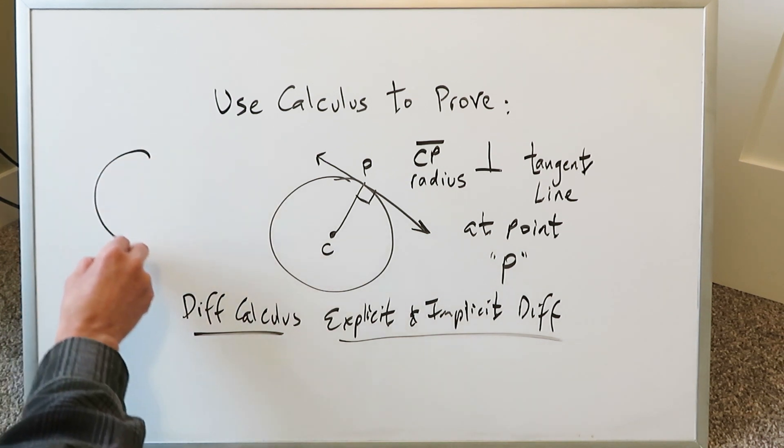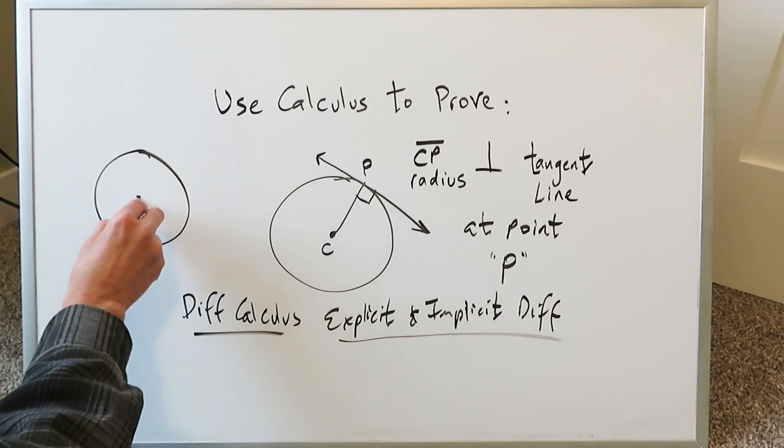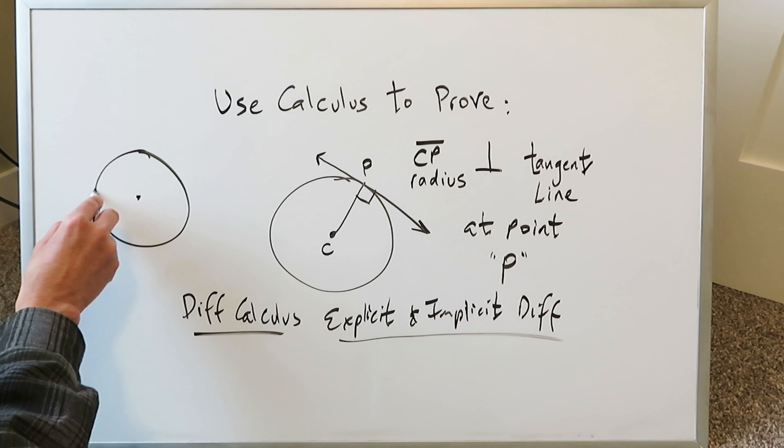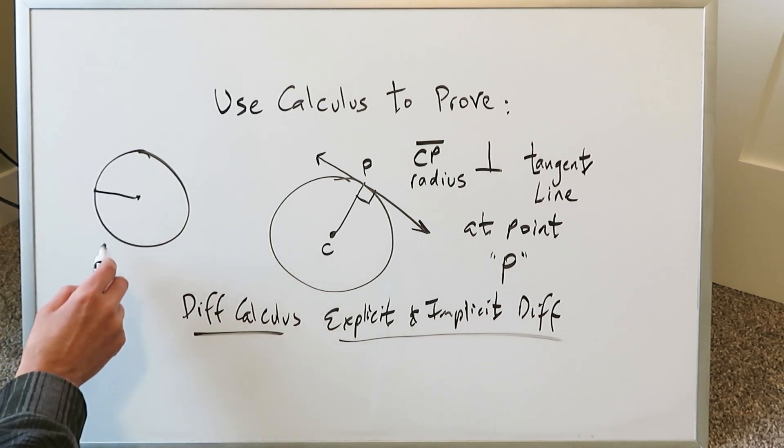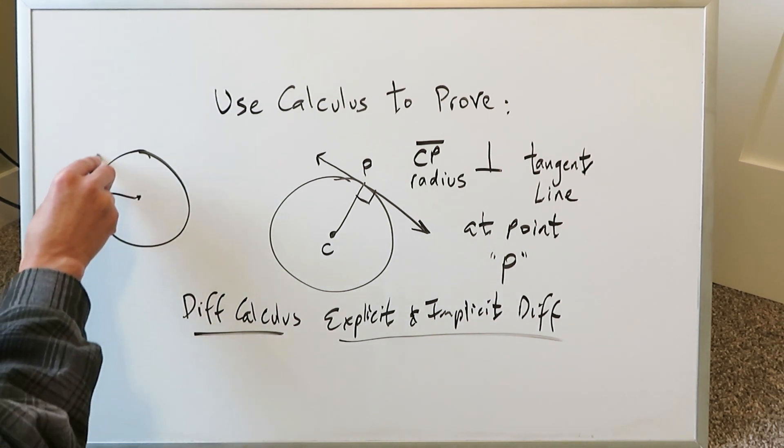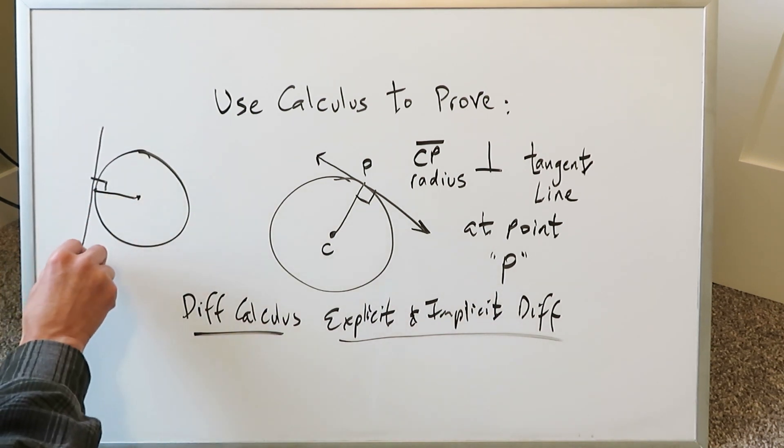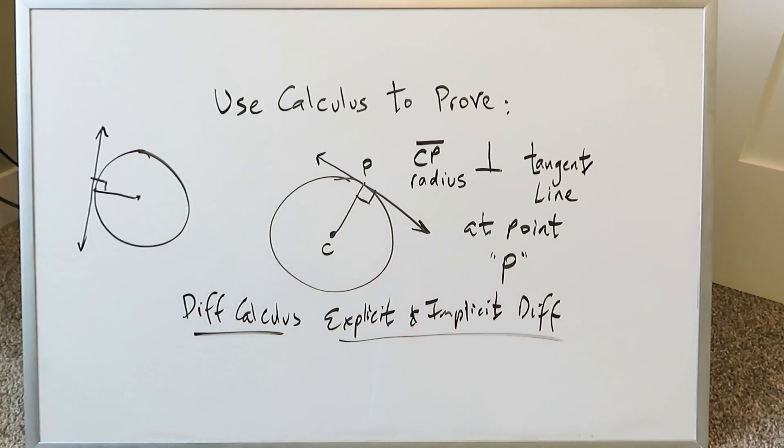And you know that's a proven theorem from geometry. Take a center, take any point on the circle, connect it, and you've made a radius. Draw a tangent line at that specific point, and then the radius and that tangent line are always perpendicular. We have to use differential calculus to prove that to be the case.